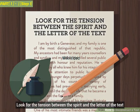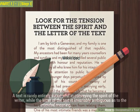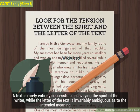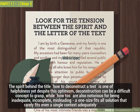Look for the tension between the spirit and the letter of the text. A text is rarely entirely successful in conveying the spirit of the writer, while the letter of the text is invariably ambiguous as to the intended meaning. The spirit behind the title 'How to Deconstruct a Text' is one of helpfulness, yet despite this optimism, deconstruction can be a difficult concept to grasp.